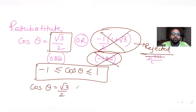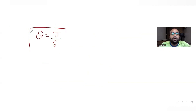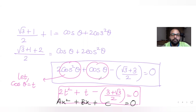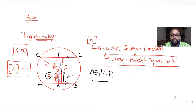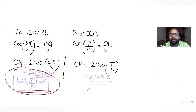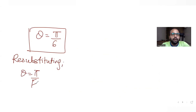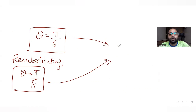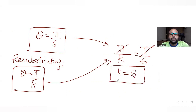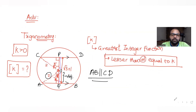cos(θ) = √3/2 corresponds to θ = π/6. Since we substituted θ = π/k, we have π/k = π/6, so the π's cancel and k = 6.